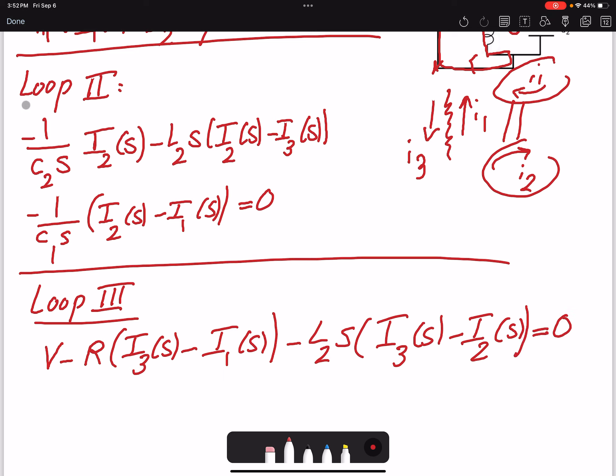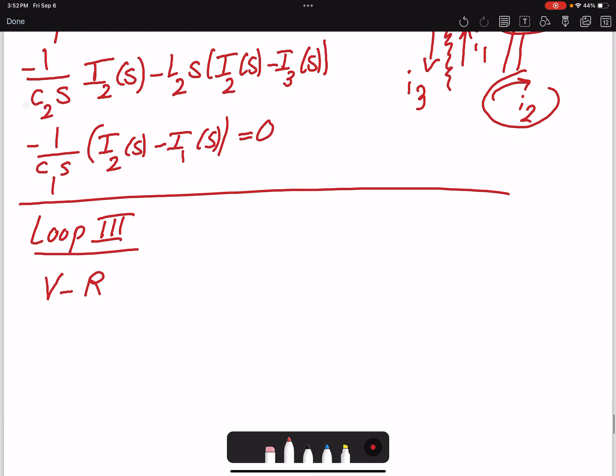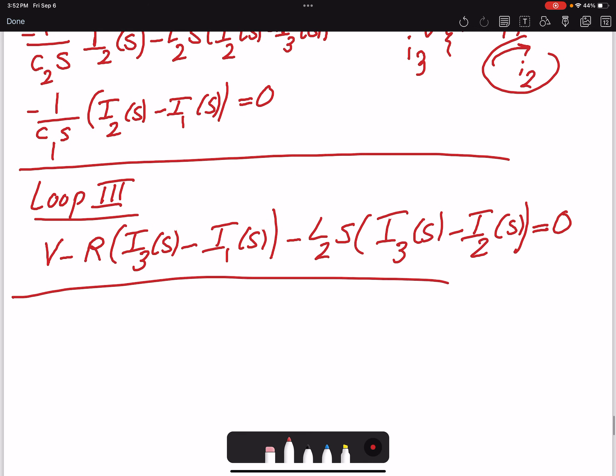So I have three loops, I wrote three equations. With three equations, I can solve for the three unknowns, which are I1, I2, and I3. So I1, I2, and I3 are the unknowns that can be determined by the three equations.